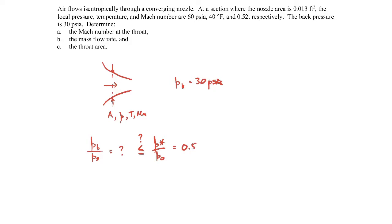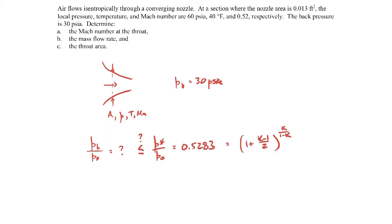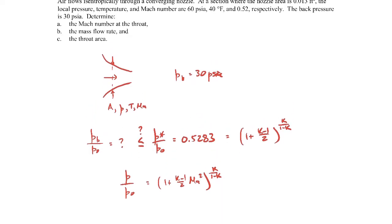For air, that critical ratio P*/P₀ comes out to be just over a half — 0.5283. That comes from the expression (1 + (k−1)/2)^(k/(1−k)), derived in the lecture. To find P_B/P₀, we first need the stagnation pressure. We can find that from the given conditions at the known location: pressure is 60 psia at Mach 0.52, and for air k = 1.4.